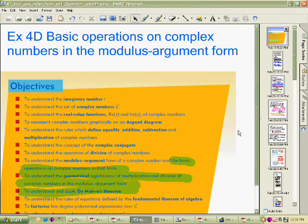In the last exercise we looked at the modulus argument form of complex numbers, also called polar form. Here we continue this by looking at the basic operations on these: addition, subtraction,